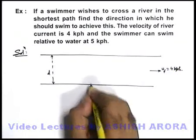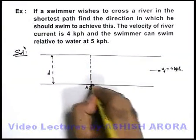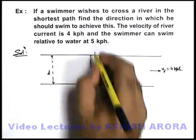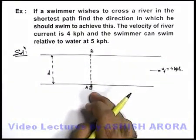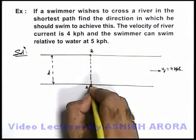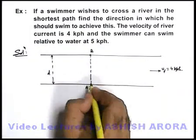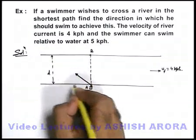A swimmer wishes to cross the river in the shortest path. If we start from point A, then obviously the shortest path is along the width of the river, that is in the direction perpendicular to river current. So if he wishes to move along this path, he needs to swim in the upstream direction.